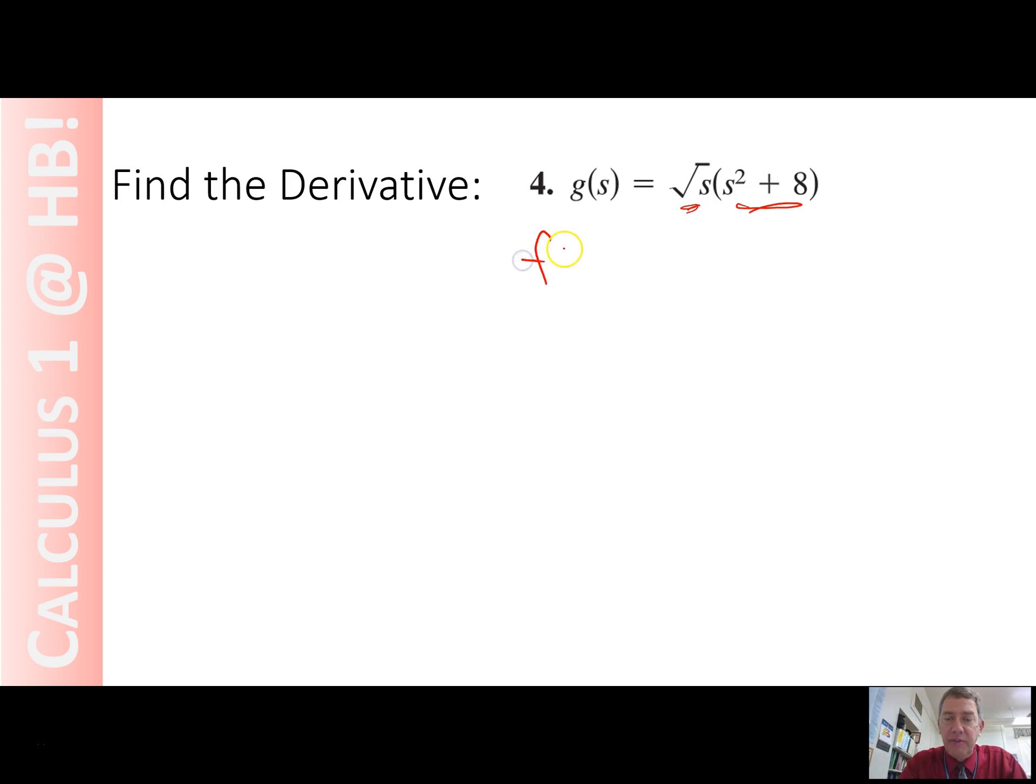So, f is the square root of s. That means f prime is, that's s to the 1 half power, so f prime is 1 half times s to the negative 1 half, also known as 1 over 2 square root of s. There we go.